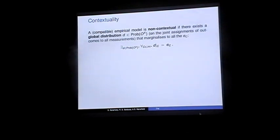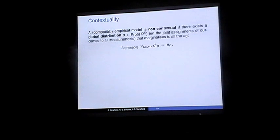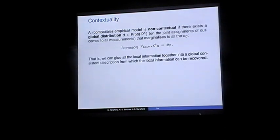So what is contextuality? An empirical model is non-contextual if there exists a global distribution — a distribution on the joint outcomes of all measurements simultaneously — which marginalizes to all the empirical distributions in the model. This definition is close to the Kochen-Specker definition. Non-contextuality means we can glue all the local information into a consistent global description. Contextuality arises whenever we have data that is locally consistent (no-signaling) but not globally consistent.